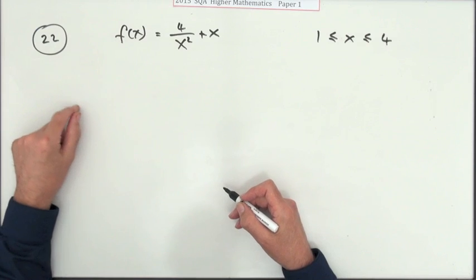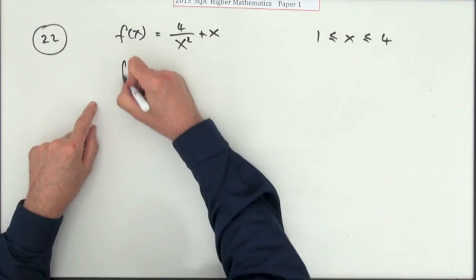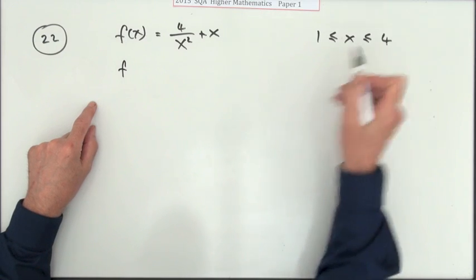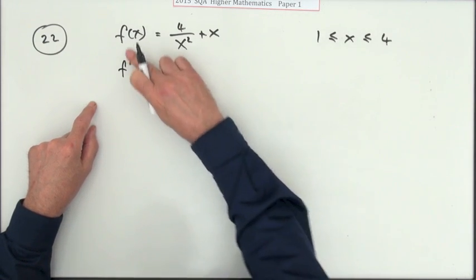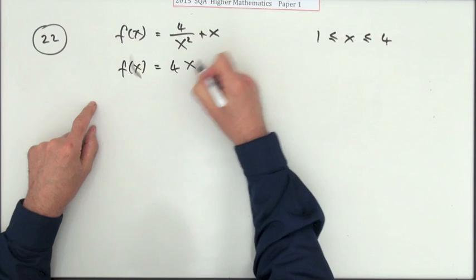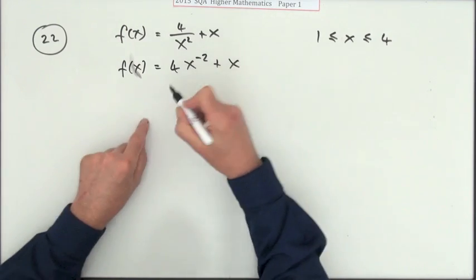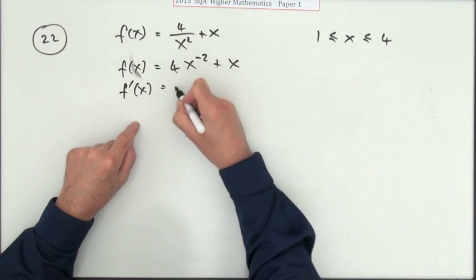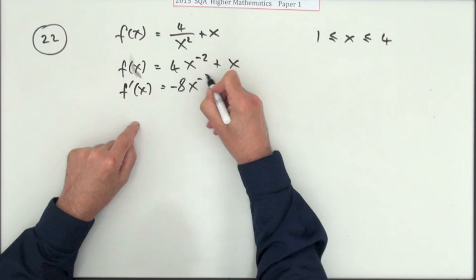The first thing I'll have to do here is see if there is a stationary point in this interval. So I need to differentiate it, but wait, I can't do that yet because I'll have to get that into a suitable form. There we go.